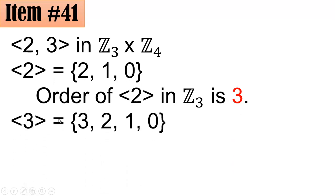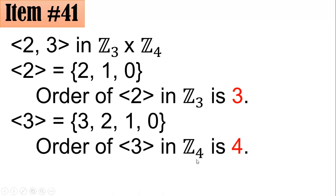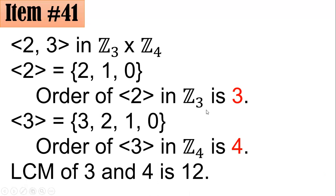For the element 3 in Z4: starting with 3, adding 3 gives 6, and 6 divided by 4 has remainder 2. Then 2 plus 3 is 5, and 5 divided by 4 has remainder 1. Then 1 plus 3 gives 4, and 4 divided by 4 has remainder 0. So the order of 3 in Z4 is 4. By a theorem, the order of (2, 3) in Z3 cross Z4 is the LCM of 3 and 4, which is 12, letter C.